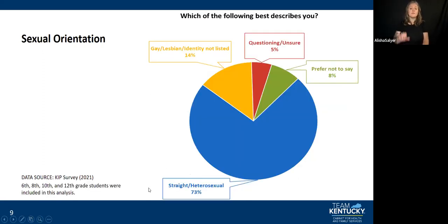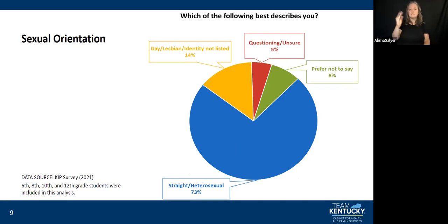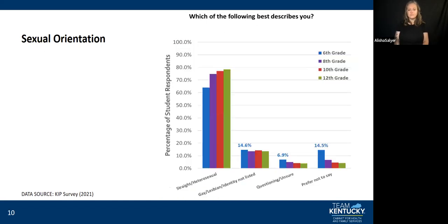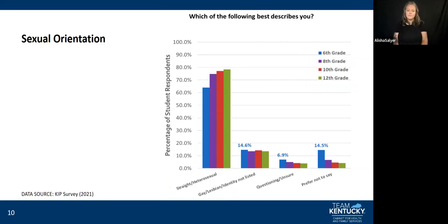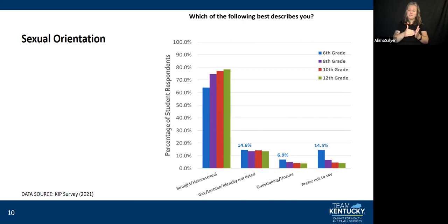For sexual orientation — which of the following best describes you? — 73% were straight or heterosexual, 14% gay, lesbian, or identity not listed, 5% questioning or unsure, and 8% prefer not to say. Looking at the breakdown by grades, especially with 6th graders, many are not yet sure — and that's what our trend lines are really showing.